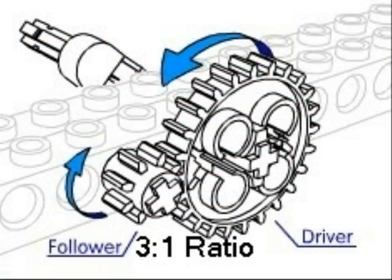Here we have a 24-tooth drive gear meshing with an 8-tooth follower. If our drive gear makes one rotation, it will cause our follower to make three rotations since each individual tooth of the driver has to mesh with a single tooth on our follower. In other words, our follower is going three times faster than our drive gear.